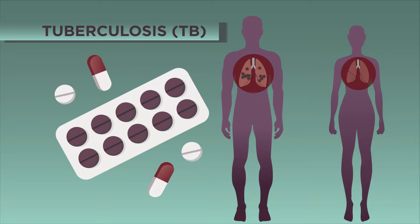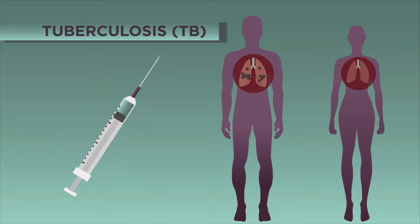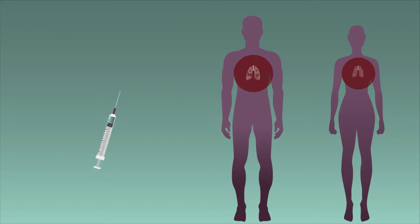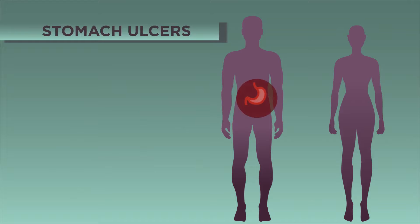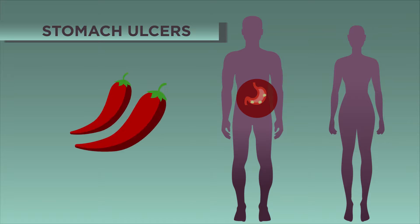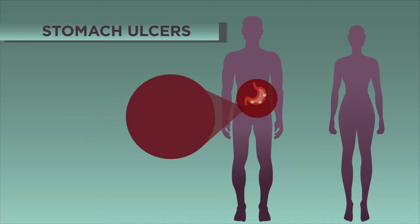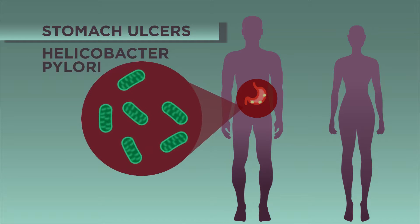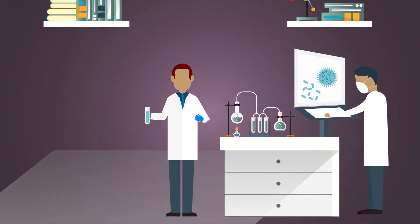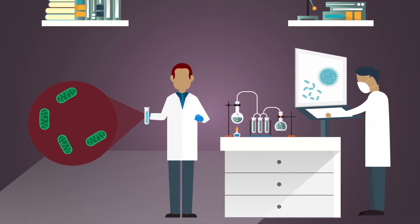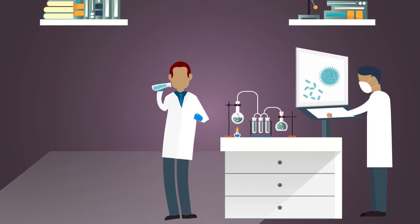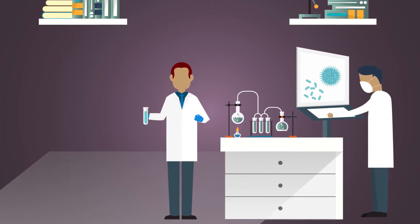TB is a serious condition, but it can be cured if treated with the right antibiotics. The number of cases of TB in many countries has been reduced by the use of vaccination. Another illness caused by bacteria is stomach ulcers. A burning pain in the stomach could be a sign of a stomach ulcer — an open sore on the stomach lining. It used to be thought that stomach ulcers were caused by the stomach producing too much acid, brought on by eating spicy food or stress, but we now know that in fact they can be caused by an infection with Helicobacter pylori bacteria. The discovery was made in 2005 by two researchers. To provide evidence, one of the scientists infected himself with the bacteria to prove that it caused stomach ulcers.